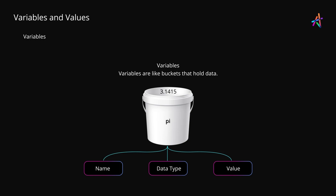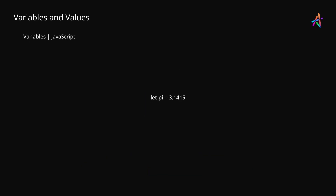The reason why we use variables is because we can use the data that they hold by simply using the name of the bucket. Now every programming language offers ways to create and use these variables. For example, in JavaScript this statement creates a variable named pi that holds the value 3.1415. Let's deconstruct this statement to understand what we are doing here — you do not have to remember how this works in JavaScript for now; I just want you to understand how variables work through a practical example.